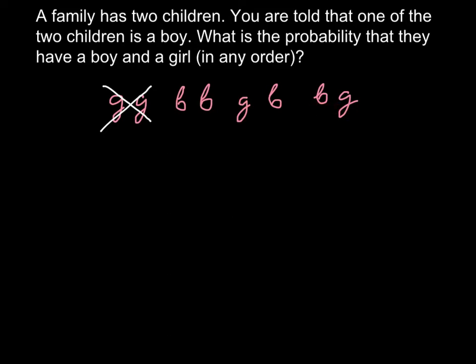So as you see, out of three possibilities - that is one, two, and three - in two cases we have a girl. So we have two out of three possibilities to have a girl, and this is our answer.